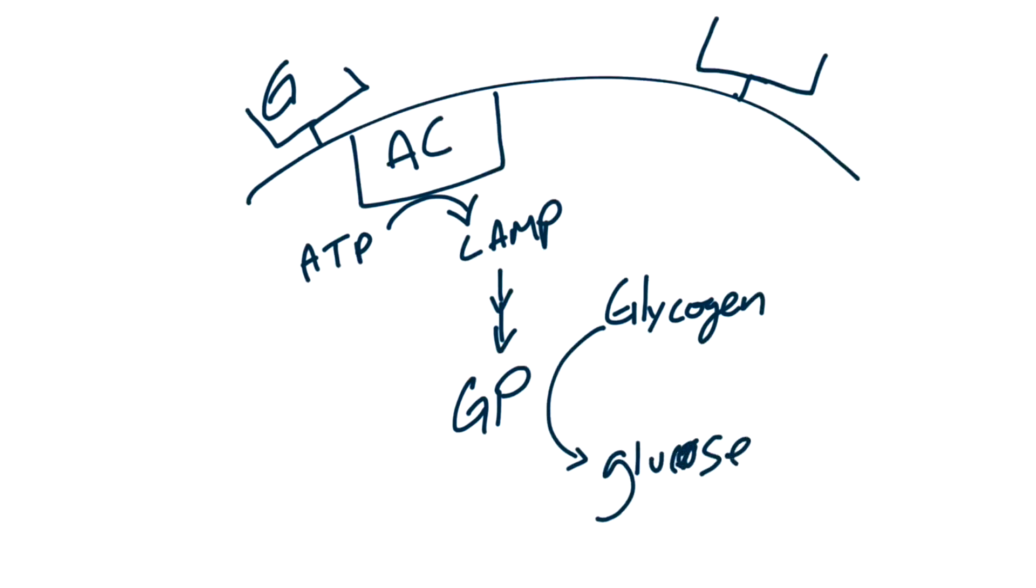When insulin binds the insulin receptor, it causes tyrosine kinase phosphorylation, which then upregulates the enzyme protein phosphatase. And protein phosphatase upregulates glycogen synthase, which converts glucose to glycogen. Memorizing the different enzymes and pathways here is very important for step one.